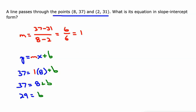And I want to take a second to show you that we could have plugged in (2, 31) as well. We could have done 31 equals 1 times 2 plus b.